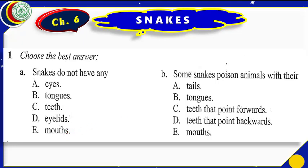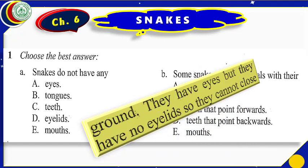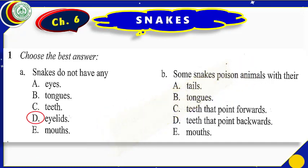We have read in the lesson that they have eyes but they have no eyelids — they cannot close their eyes. So the thing that they don't have is eyelids. That is why our correct option will be D.